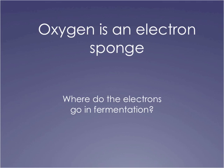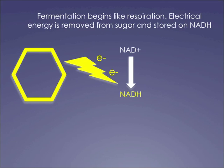Fermentation is an anaerobic process — you have no oxygen — which means you've got electrons you've got to get rid of. That's the big question with fermentation: what the heck do you do with all of these electrons? You don't have the oxygen to take them away at the end of the electron transport chain, so you can't send them through the electron transport chain. But those electrons have still got to go somewhere.